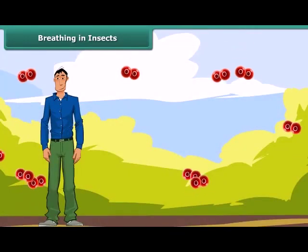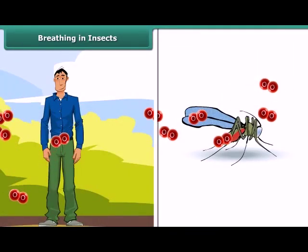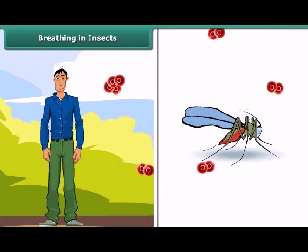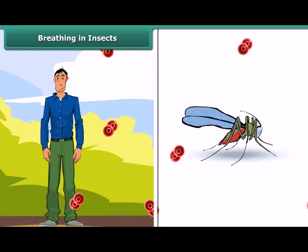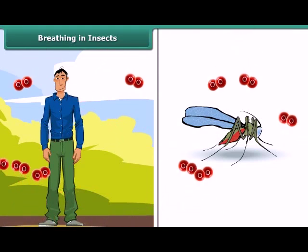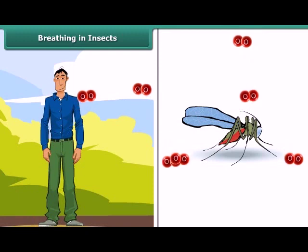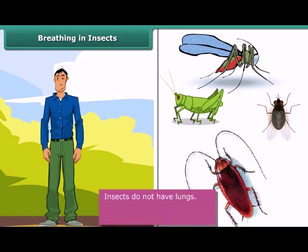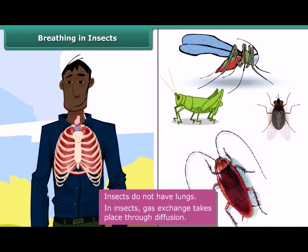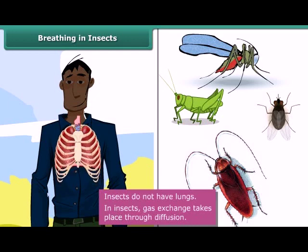Like human beings, insects need oxygen for survival. Again, like human beings, they produce carbon dioxide as a waste product. But unlike human beings, insects like grasshoppers, houseflies, and cockroaches do not have lungs. The process by which gas exchange takes place in insects is known as diffusion.